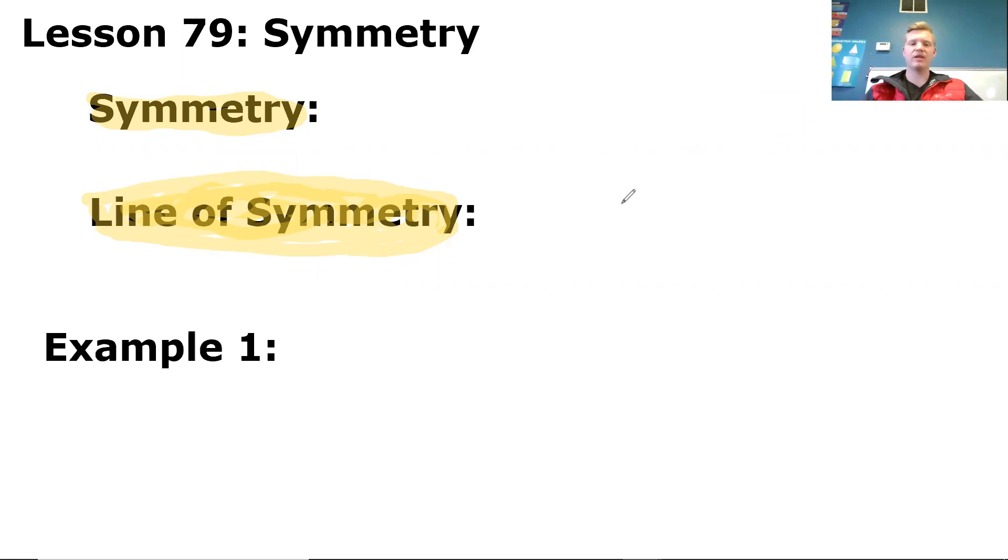So what we're going to be doing here is, go ahead in your textbook and open up to page 367. So lesson 79 is regarding symmetry. So what is, first off, what is symmetry? So read right out of the book on page 367.